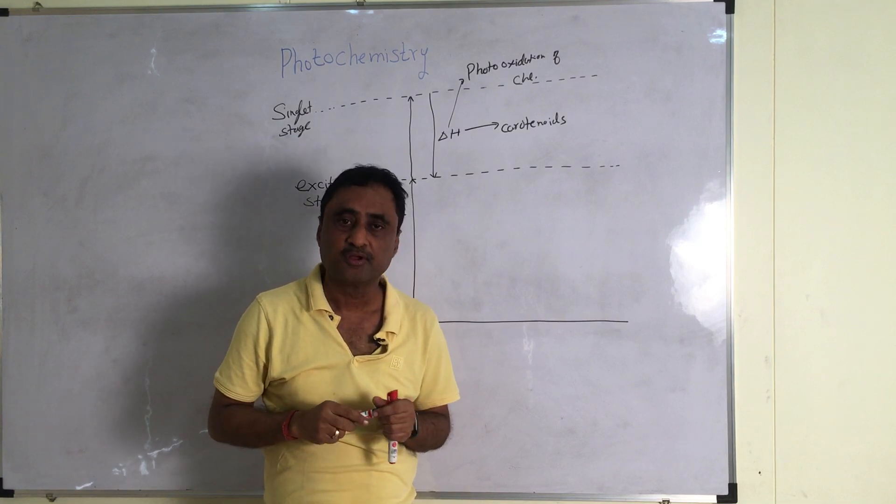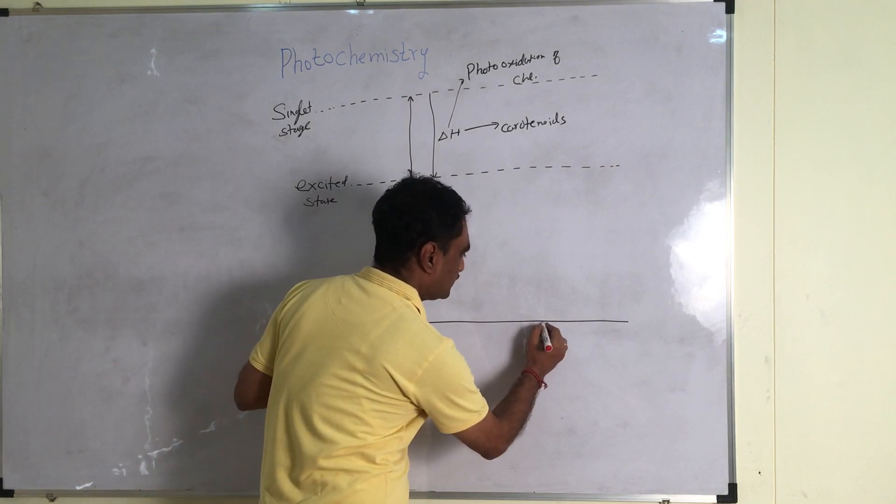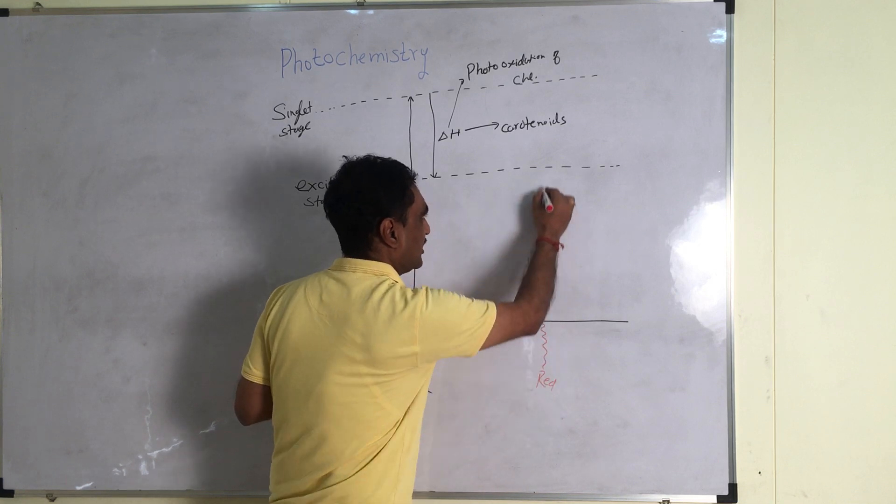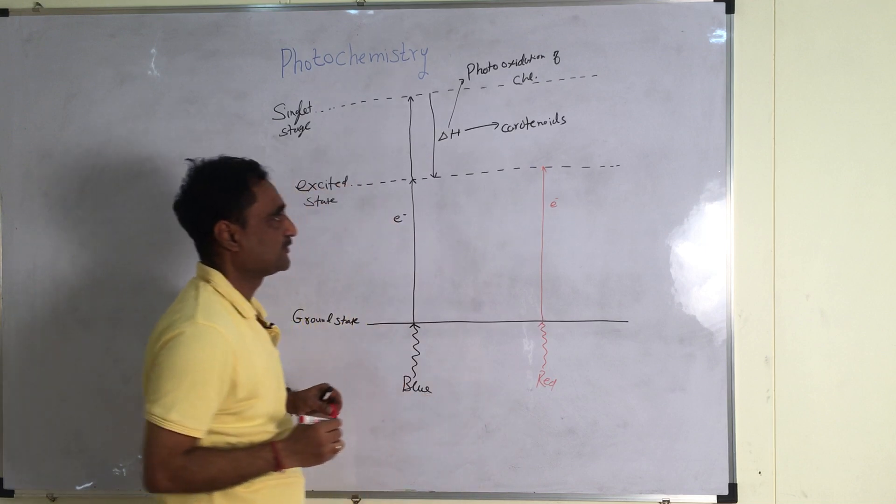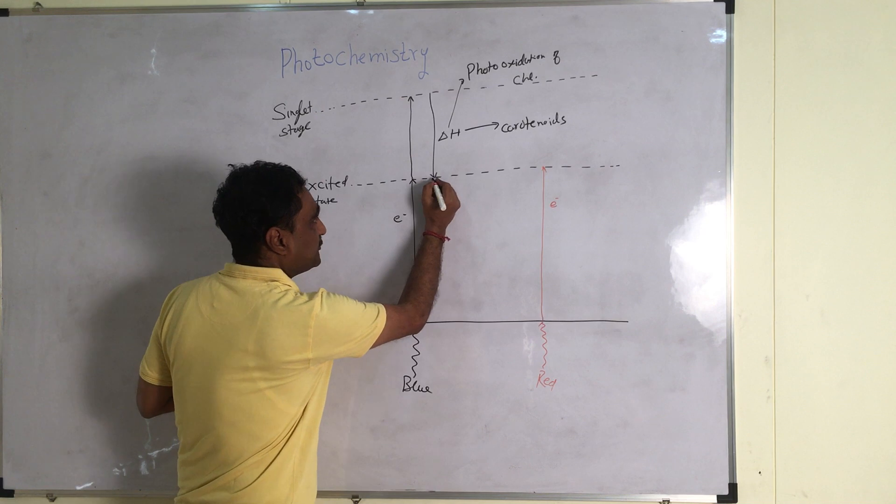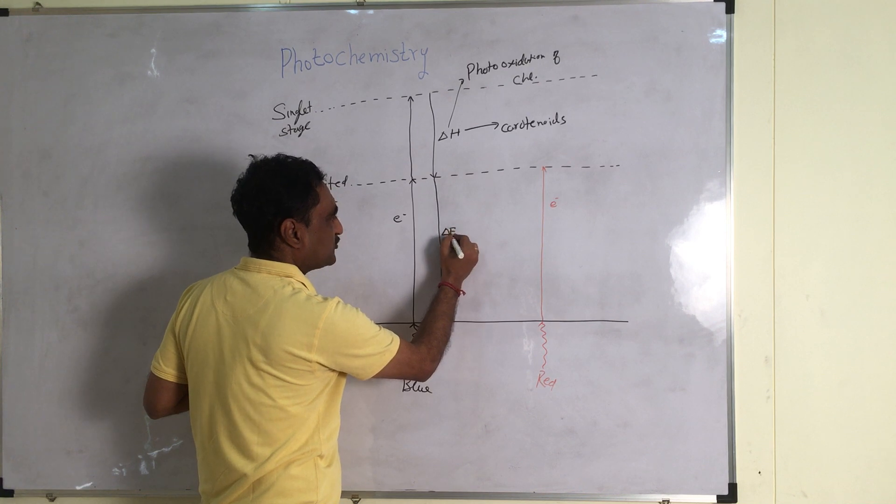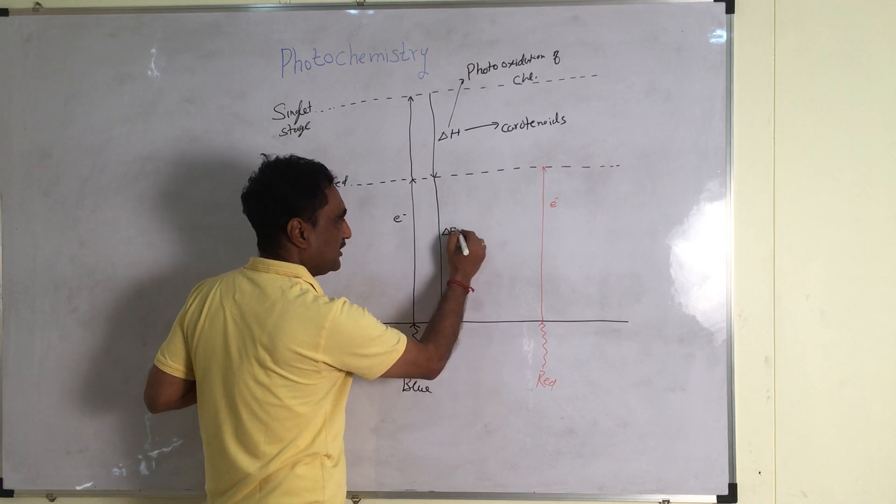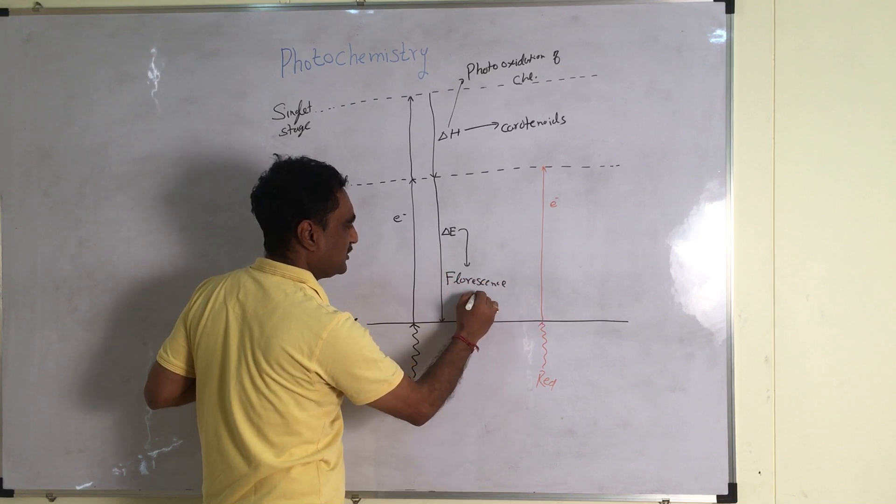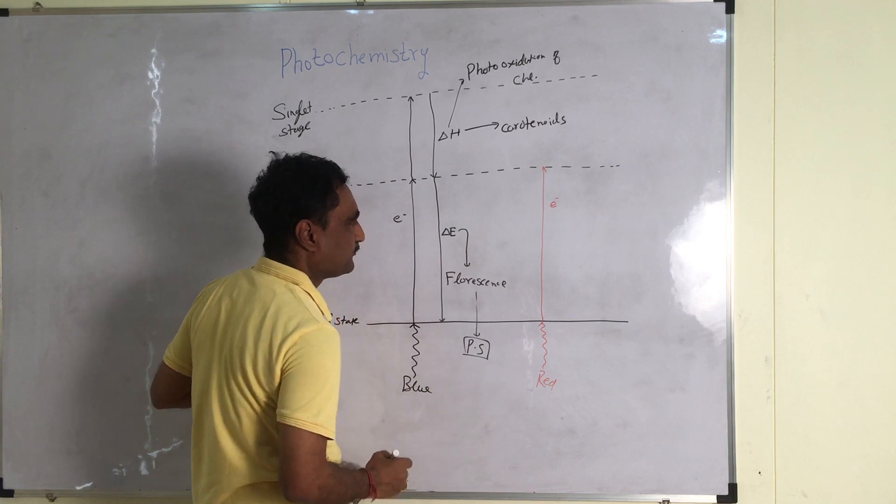But let us see what is going to happen when we use red light. So suppose this red light is given. Here also the electron will be expelled. So from this particular state, when it comes down, then a delta E is going to be used and this will show the phenomenon of fluorescence. This will be releasing energy and that is going to be utilized for photosynthesis.